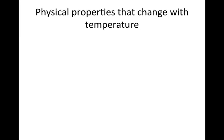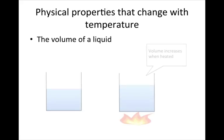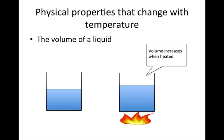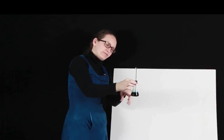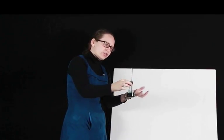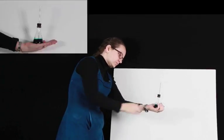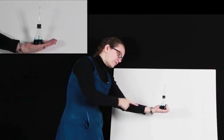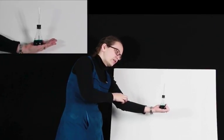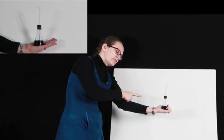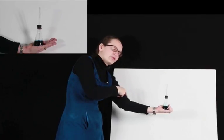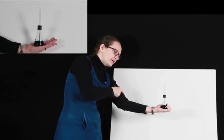Now there's several physical properties that change with temperature. One of these is the volume of a liquid. As we heat a liquid, its volume actually increases. Let's have a look at that happening now. What I've got here is a flask with some water with food dye in it and a capillary tube. I'm going to hold on to it with my warm hand. As I'm holding it, I'm transferring heat from my hand to the liquid causing the temperature of the liquid to rise and this is causing the volume of the liquid to rise. You can see that the liquid is rising up through the capillary tube as its volume increases.